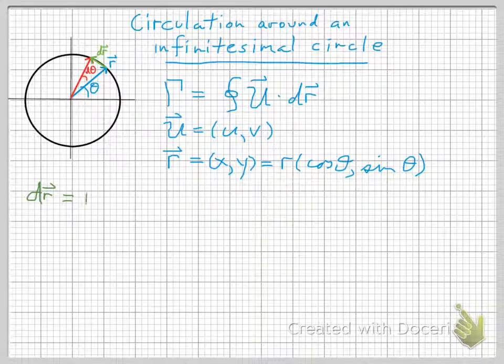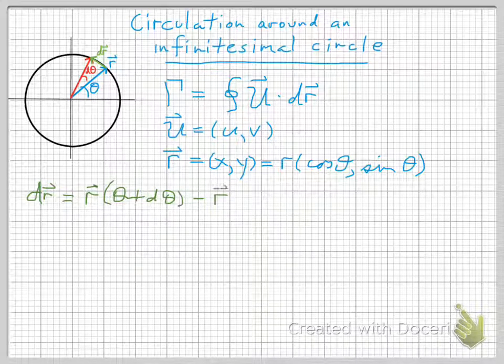dr is r at theta plus d theta, that's the red vector, minus r at theta. That's the blue vector.